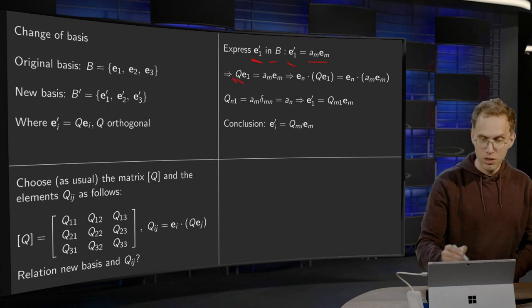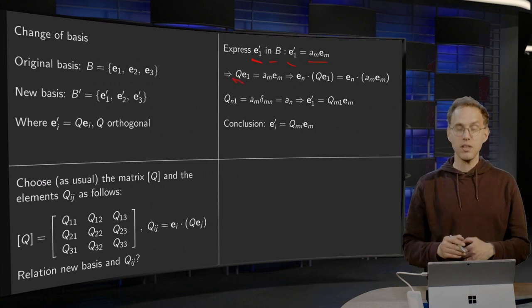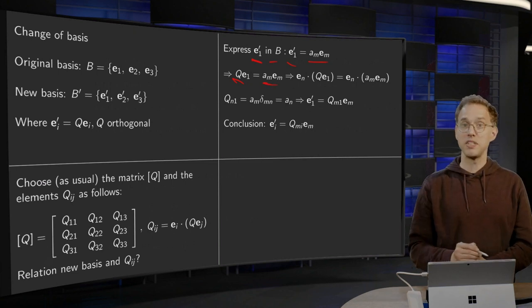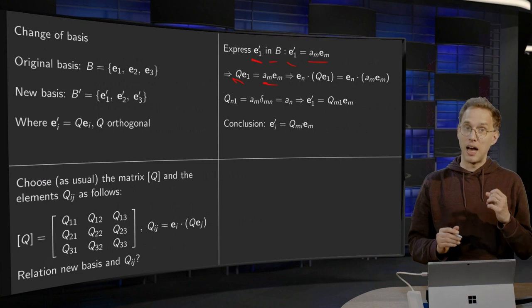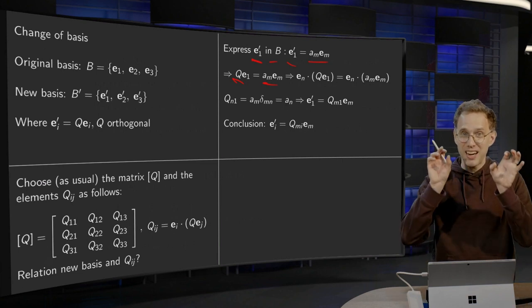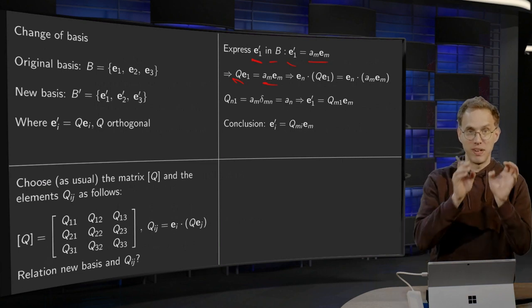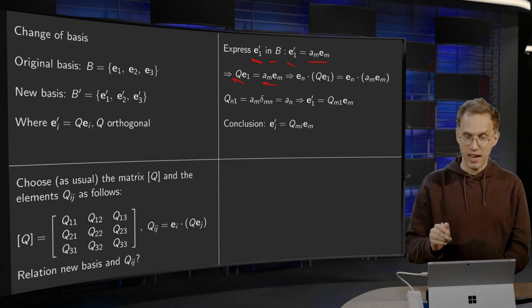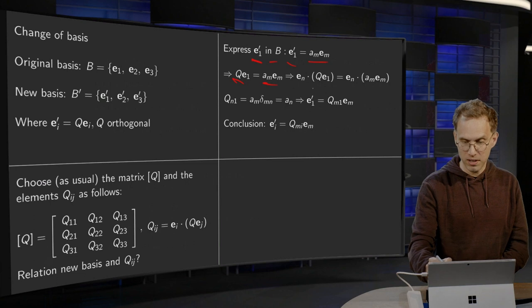Then we compute Q*E1. Well, Q*E1 was E1', so that equals AM*EM. Now we take on the left and the right inner product with EN. So we get EN·(Q*E1) and EN·(AM*EM). So that's what's happening over here.